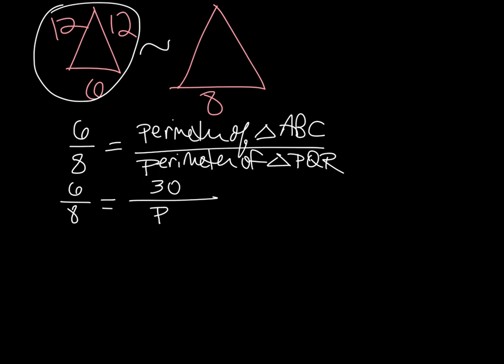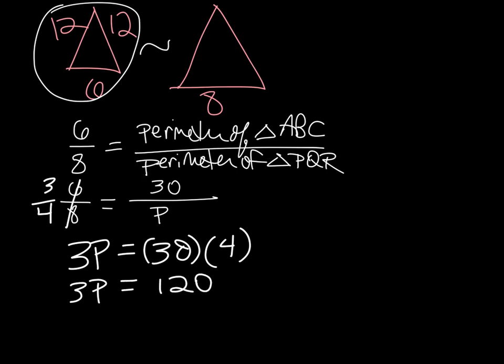And now I just have to cross multiply once to figure out what the perimeter of the second triangle is. Once again I can reduce this to 3 over 4 and now cross multiply. 3P is equal to 30 times 4. 3P is equal to 120. P is equal to 40.